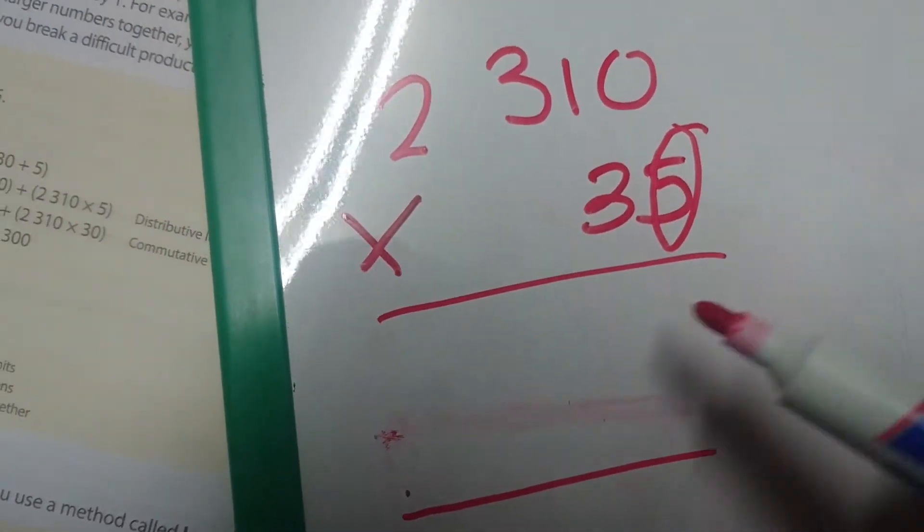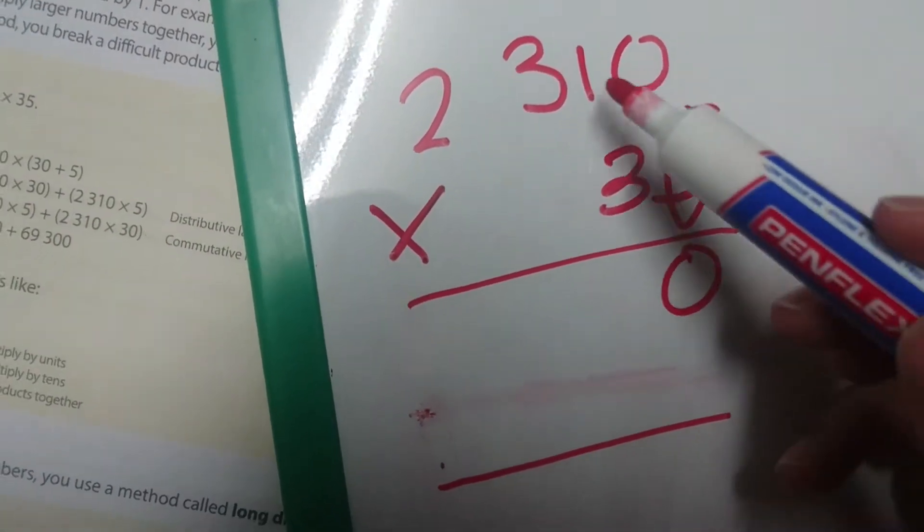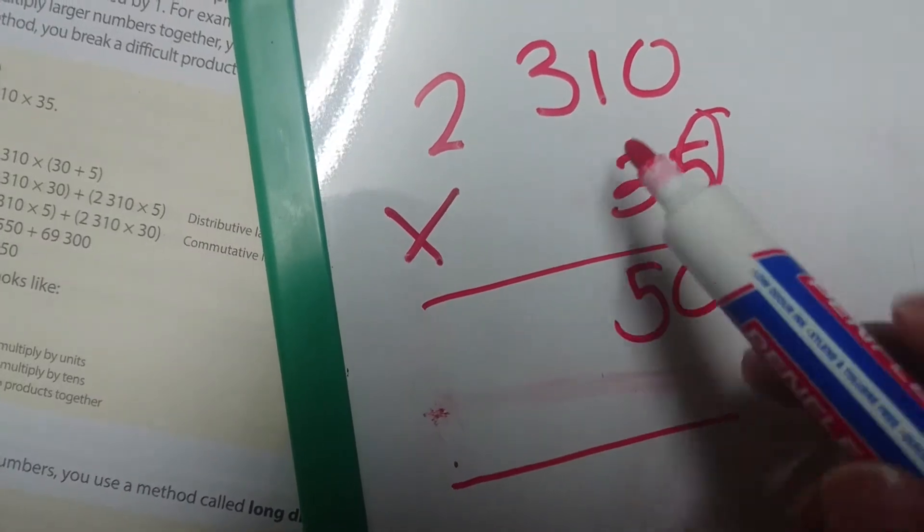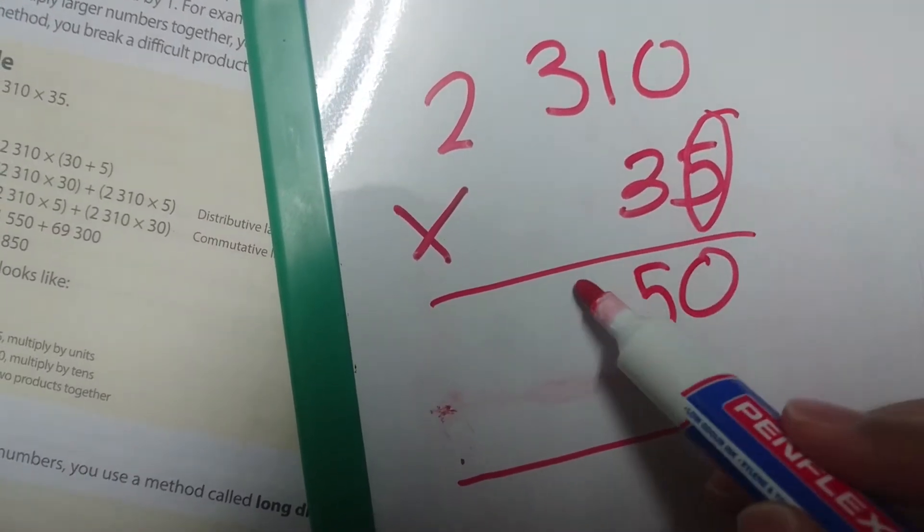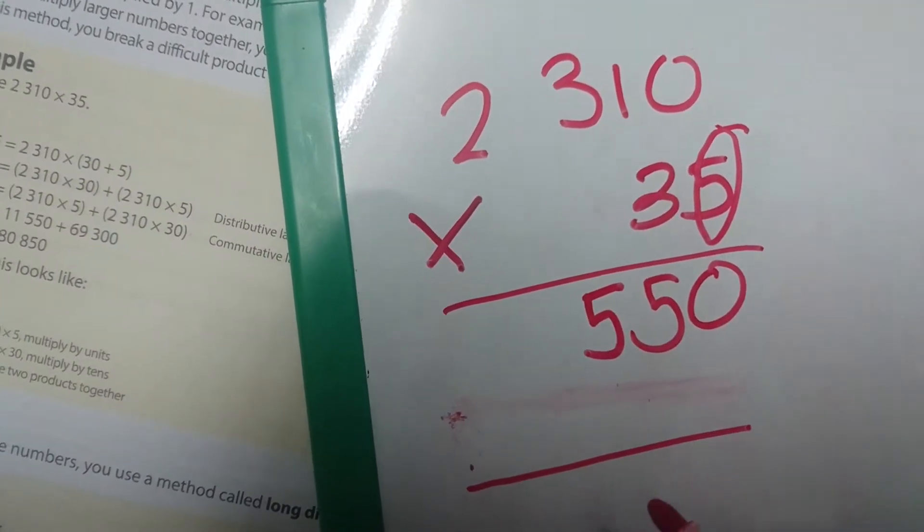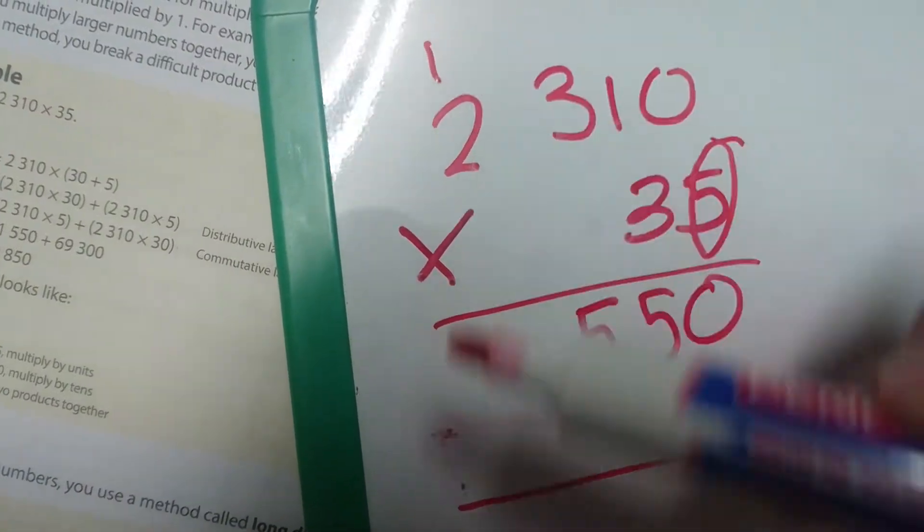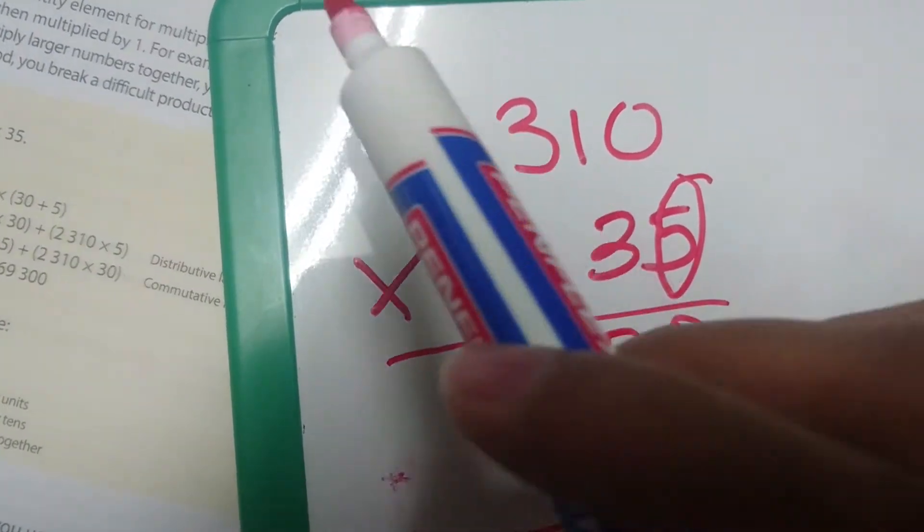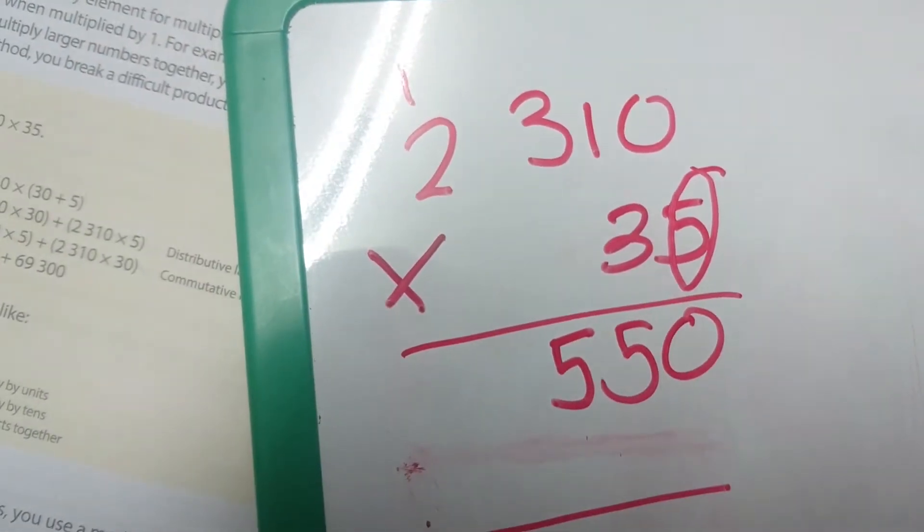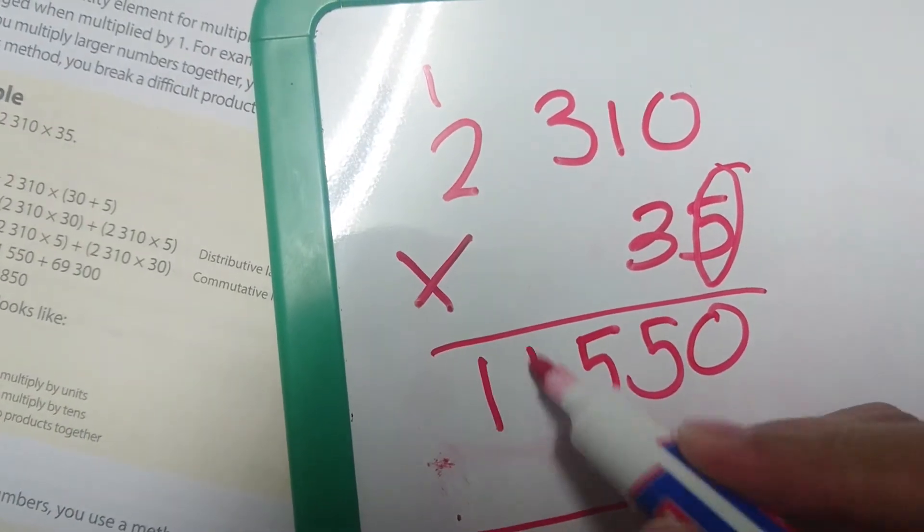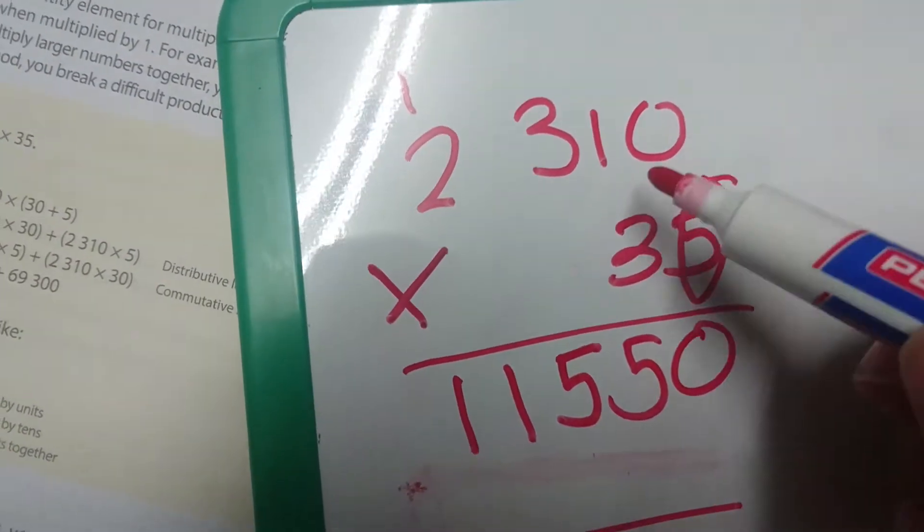We are going to start with the unit section and multiply the top number by the 5. We're going to say 0 times 5 is 0, 1 times 5 is 5, 3 times 5 is 15. So you put down the 5 and we carry the 1 to the 2. Then 2 times 5 is 10 plus the 1 is 11.